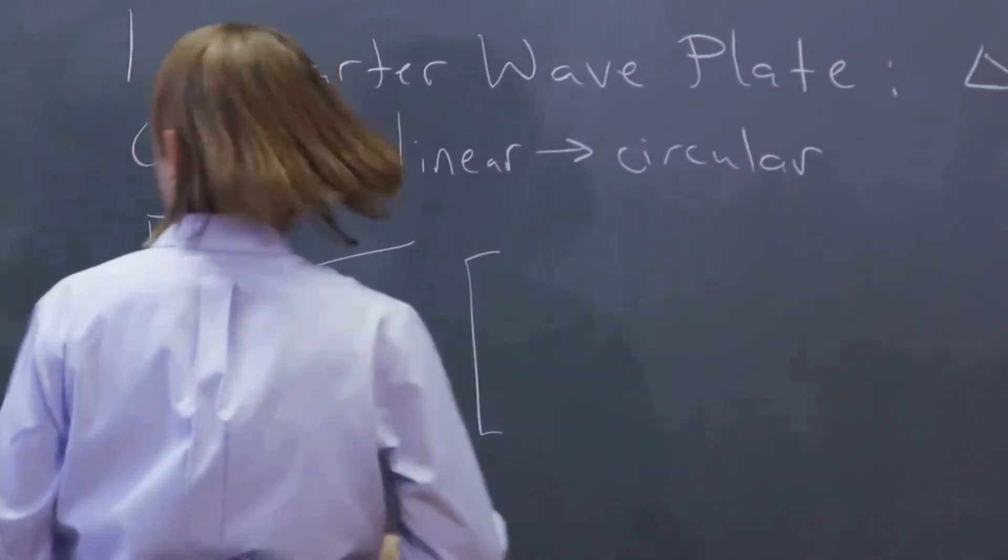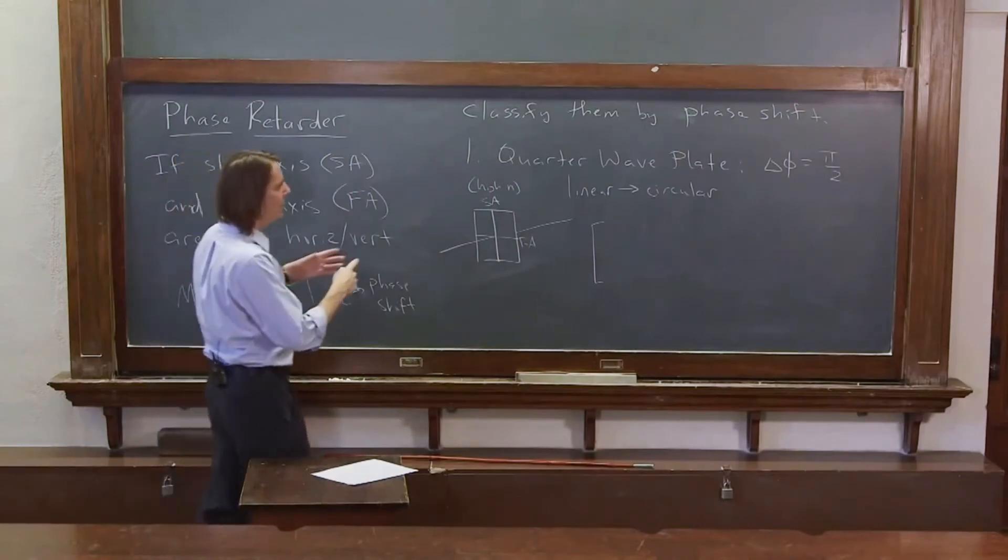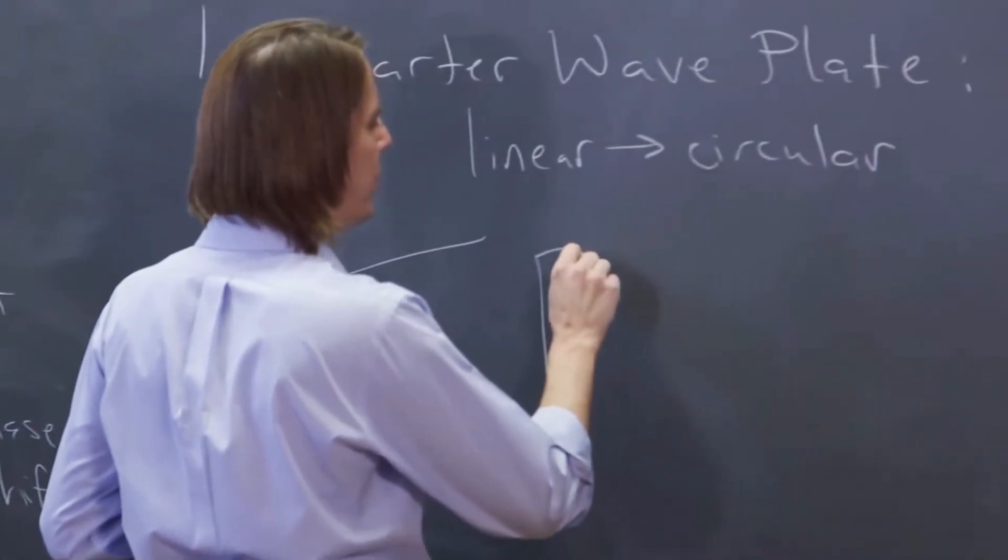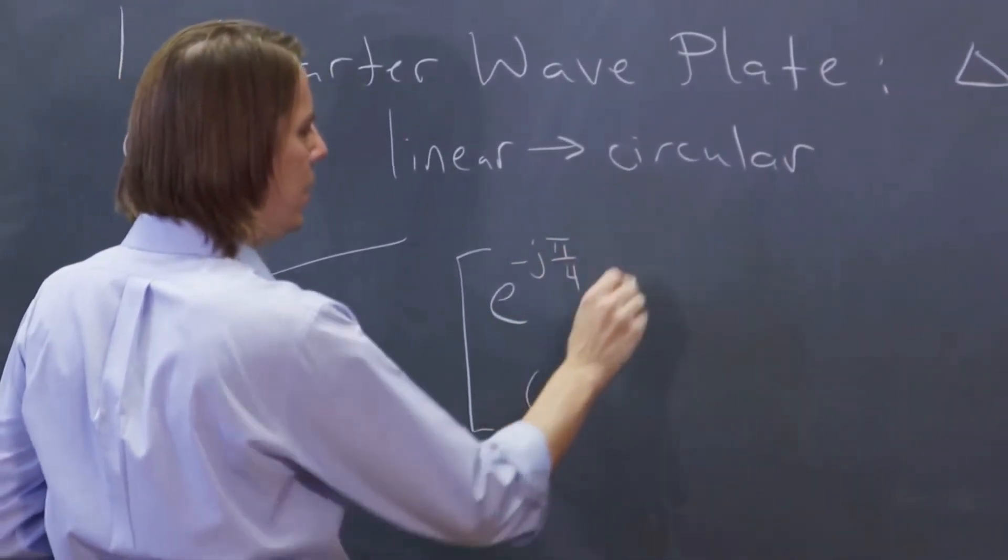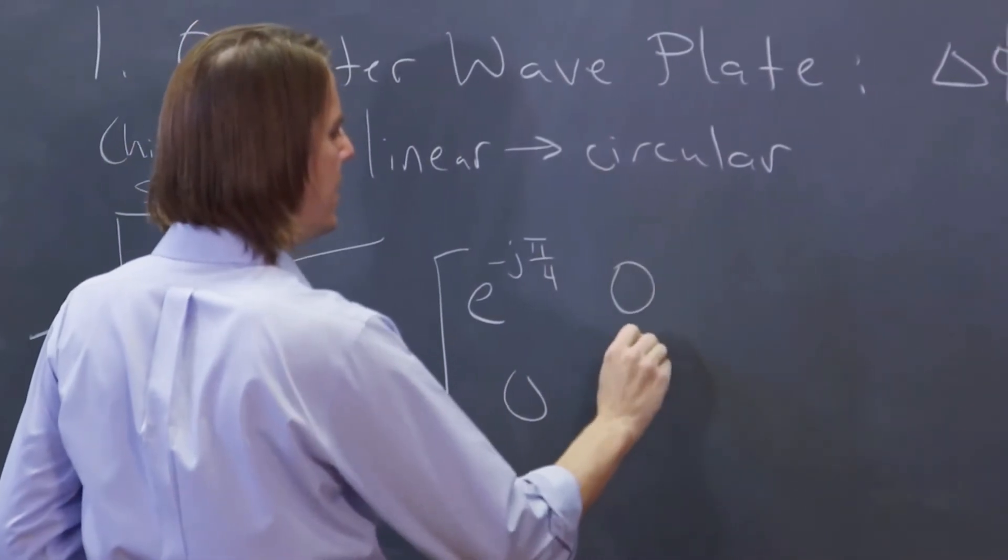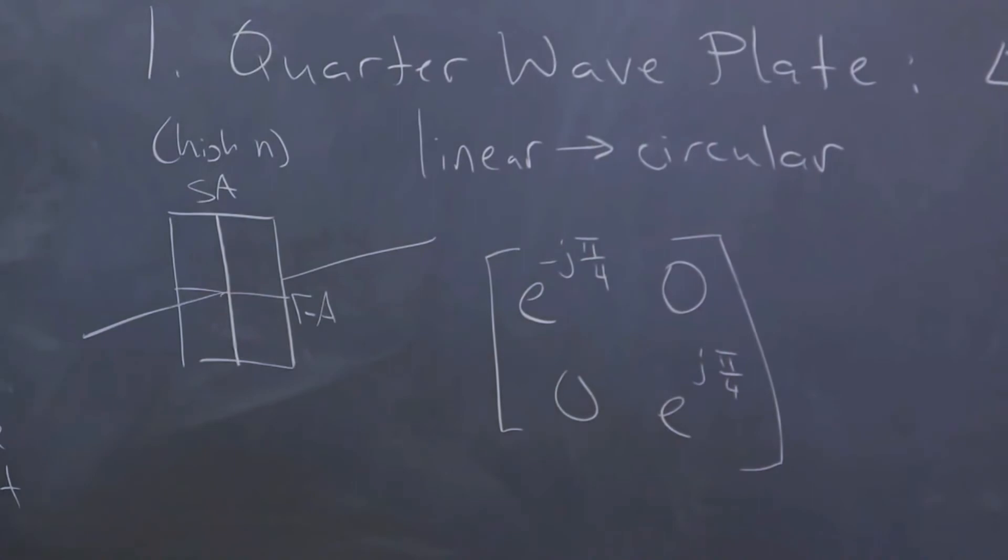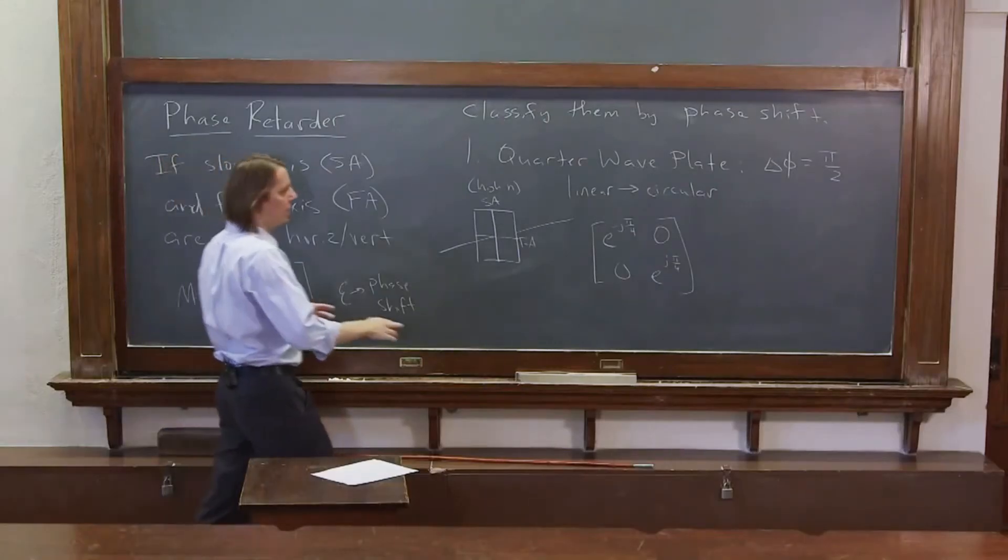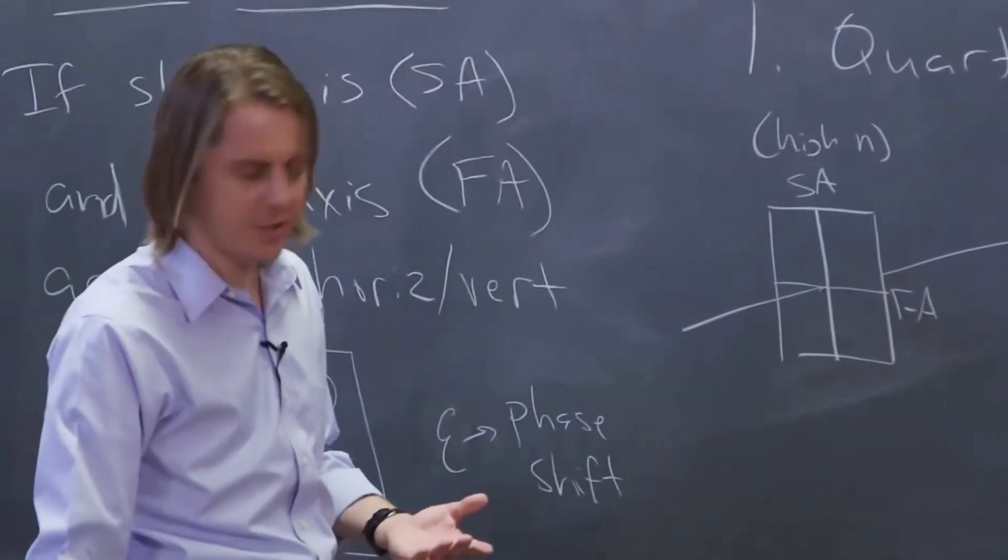So let's think about what would the matrix look like for that. Well, let's see. So we said it's e to the j, and we have the horizontal shift and the vertical shift. We want to end up with a total shift of pi over 2. So each one has a shift of pi over 4. So what we're going to do is have e to the minus j pi over 4 here, and e to the j pi over 4 here. And that way, the difference between vertical and horizontal, if you multiply them out, you can see it's pi over 4 minus minus pi over 4. It's a pi over 2 phase shift.